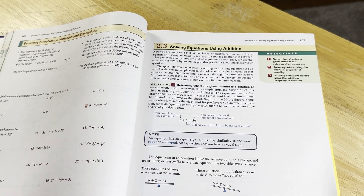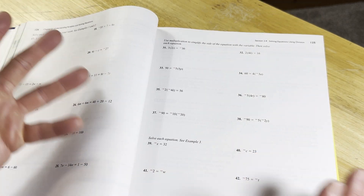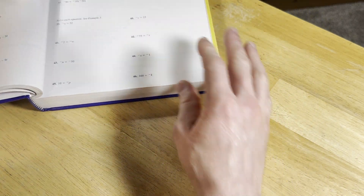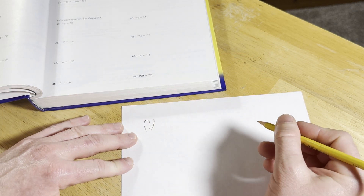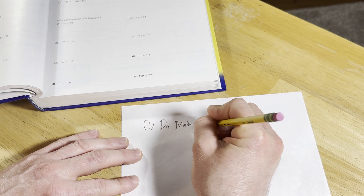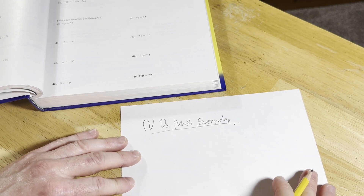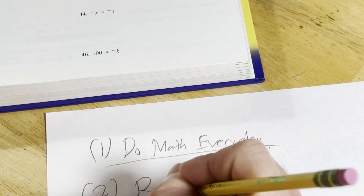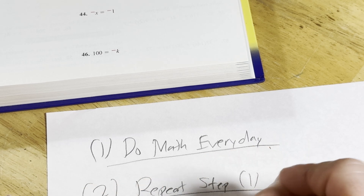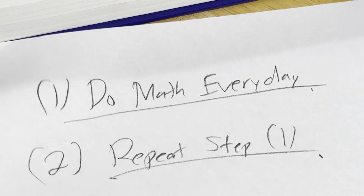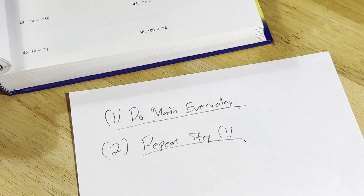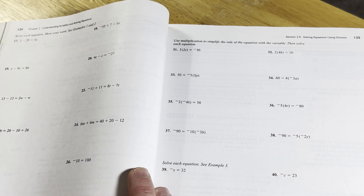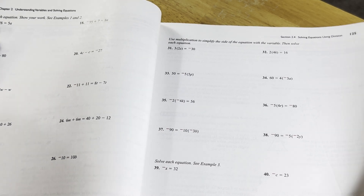If you're watching this and thinking you'll never get better at this — you will. So with a book like this, what you want to do: buy the book, sit down, and start doing math every day. That's really the only step — do math every single day, and then repeat. There's no secret formula. It's like anything else: if you want to get better at swimming, you swim; if you want to get better at speaking a language, you speak it. If you want to get better at math, you have to do mathematics.